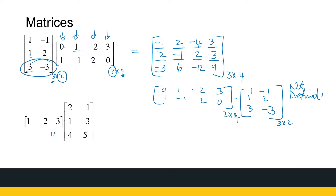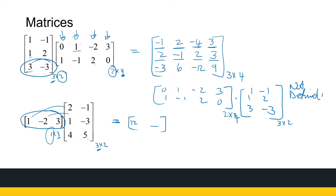Next example: a one row, three columns matrix times a three row, two columns matrix. I can multiply them because those inner dimensions match, and my resulting matrix will be one by two. First row, first column inner product: two minus two plus twelve is twelve. First row, second column: minus one plus six plus fifteen. Six minus one is five, plus fifteen is twenty. So my resultant matrix is the one by two matrix [12, 20].